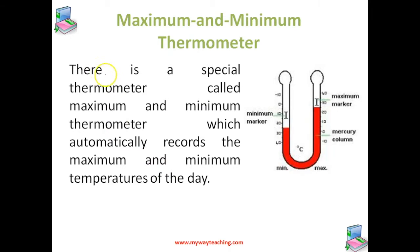Another important concept is the maximum and minimum thermometer. The maximum temperature of the day usually reaches in the afternoon, whereas the minimum temperature is obviously in the early morning. In weather forecasting and some meteorological work, it is necessary to know the highest as well as the lowest temperatures reached in the surroundings during a whole day.